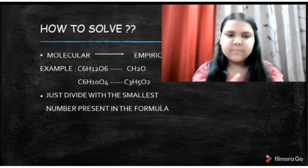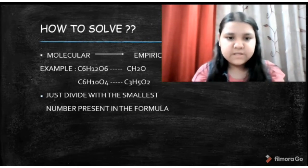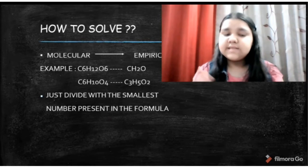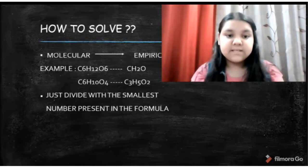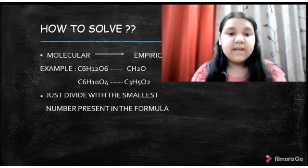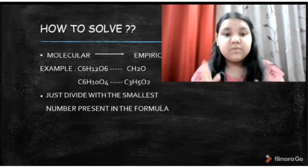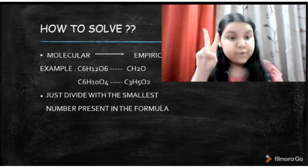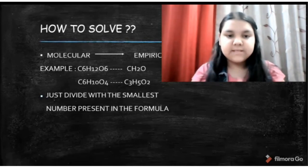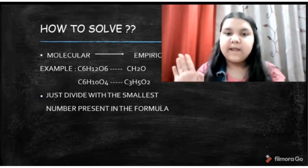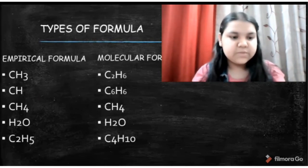In the second example, the smallest number is four. Six and ten are not completely divisible by four, so we get a decimal answer. Six divided by four is 1.5, and ten divided by four is 2.5. Since we can't keep the answer in decimal form, we multiply the whole formula by two, giving us 2.5 and 1.5 each multiplied by two, and oxygen is also multiplied. The answer comes out as C3H5O2.